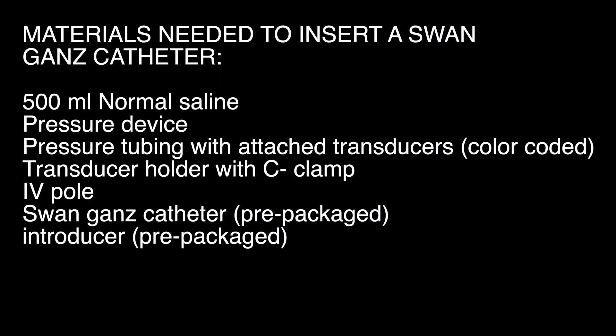Materials needed to insert a Swan-Ganz catheter: 500 milliliters of normal saline, pressure device pressure tubing with attached transducers, transducer holder with C-clamp, IV pole, Swan-Ganz catheter and introducer.